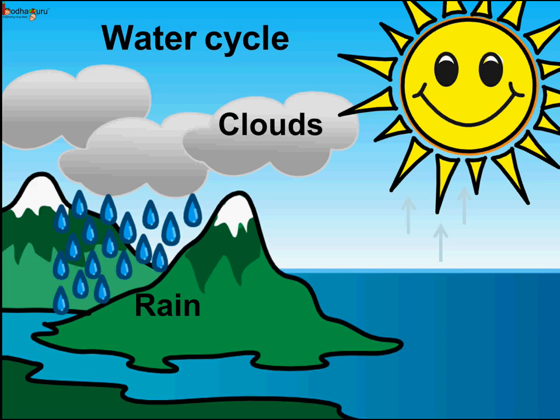So, this is the water cycle. Now you know what is the water cycle. It is the cycle of water forming water vapor, then clouds, then falling as rain, filling up ponds, and again continuing.